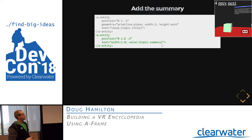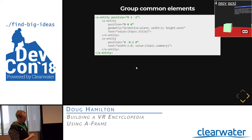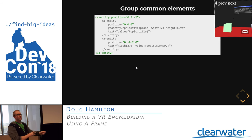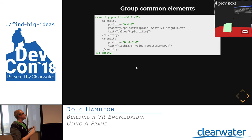We want the summary paragraph to always be positioned just below the title, so we'll group these under a parent entity. We move the position that was on the title to the parent entity, zero out the title's position, and set the summary's position to 0.2 meters below the title. This way we can move both together as one unit by changing only the parent's position. This matters because in VR development you're usually guessing at coordinates on your monitor, then you put the headset on and realize things are incorrectly positioned — the fewer places you have to make changes, the faster the feedback cycle.